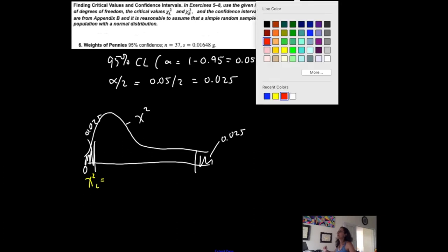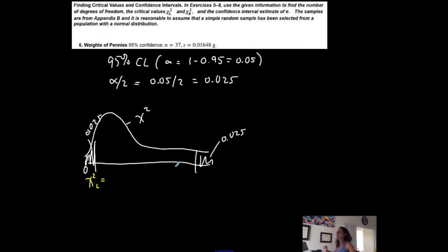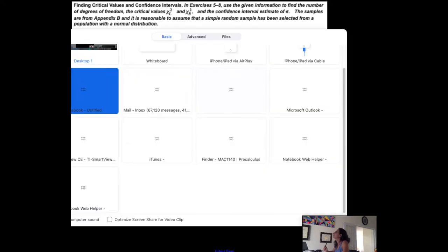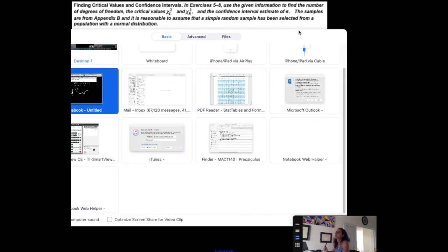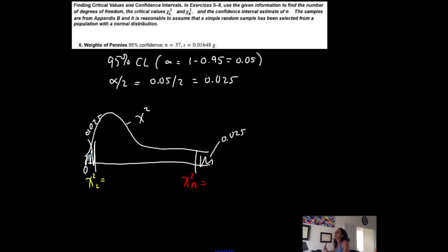And my right-tail chi-squared critical value is red. And my right-tailed chi-squared critical value is the one that separates this area in the right-tail or on the right side.